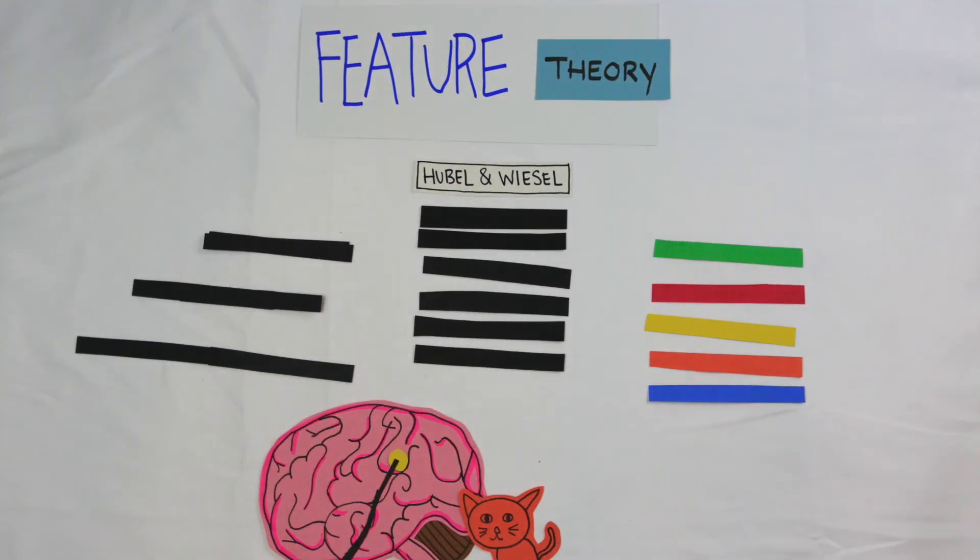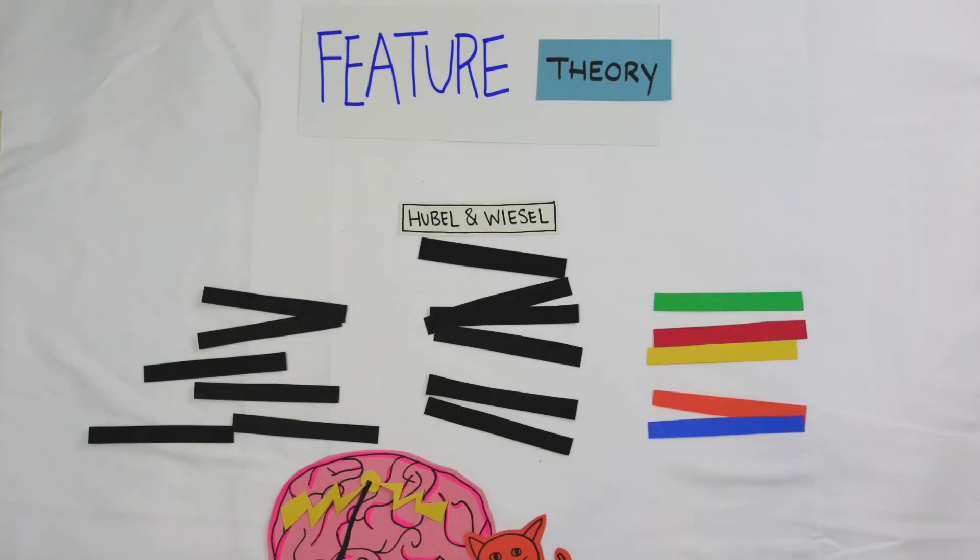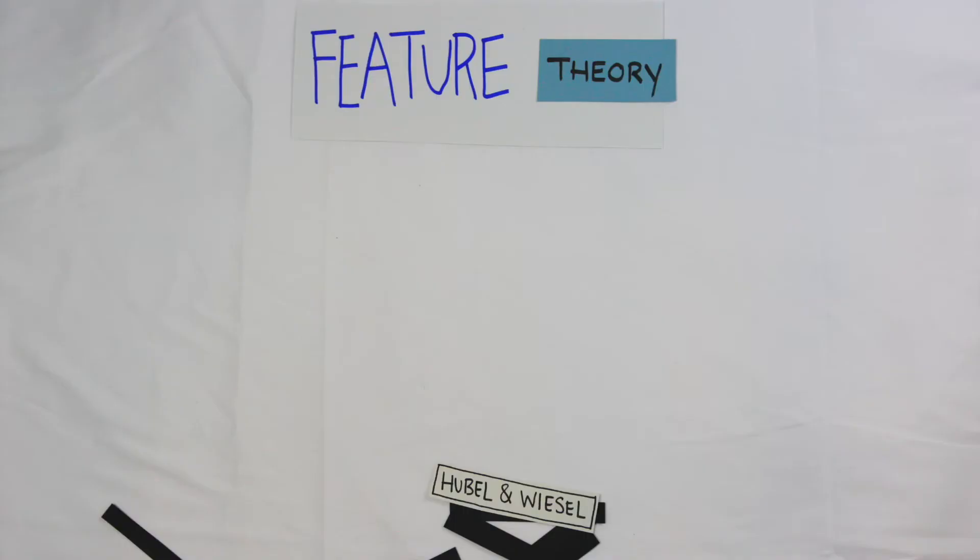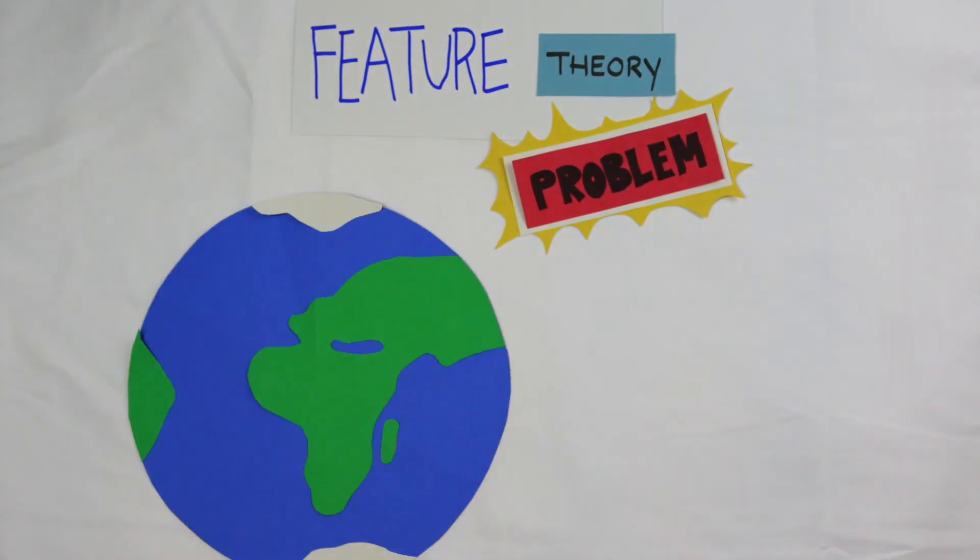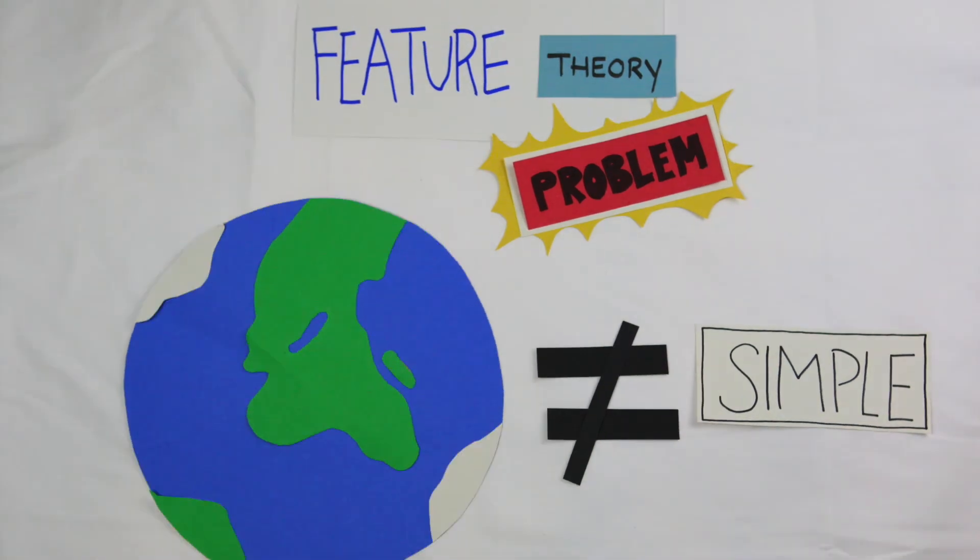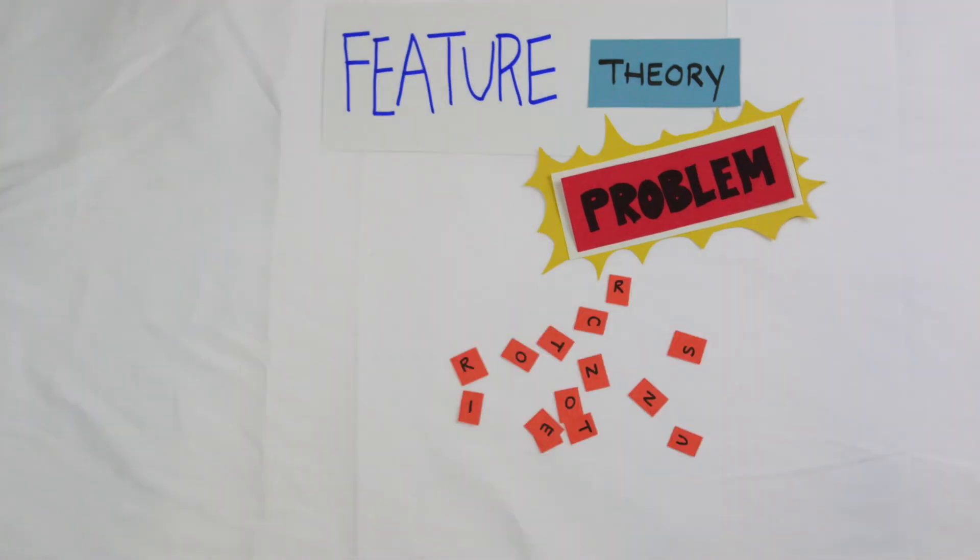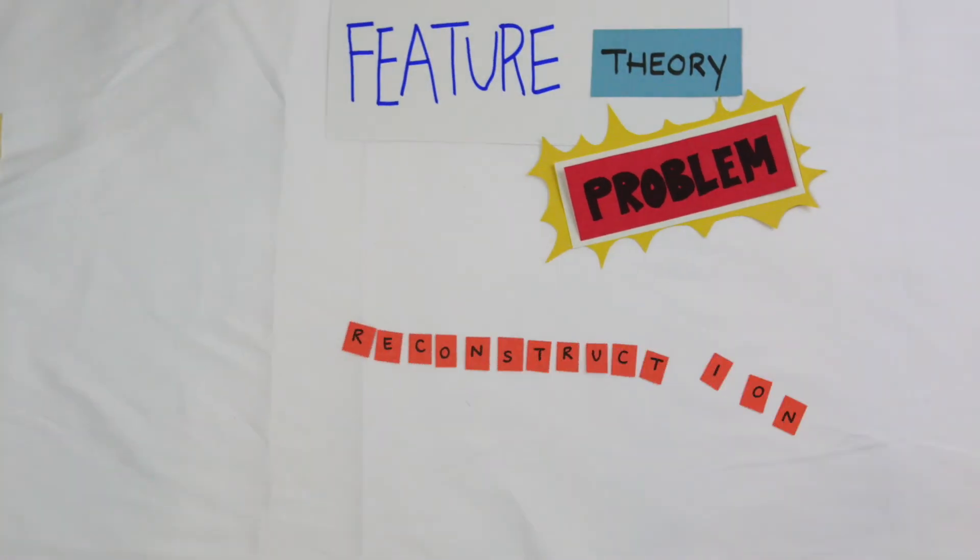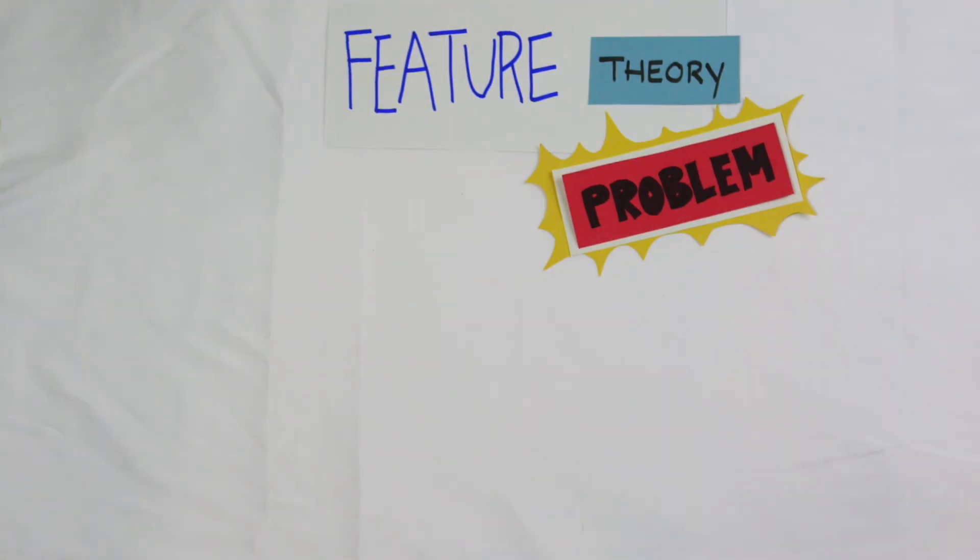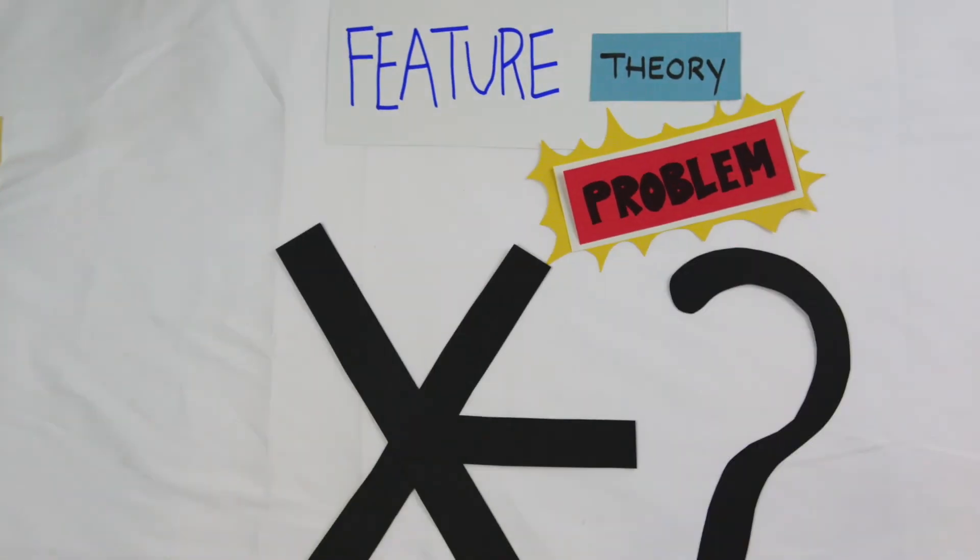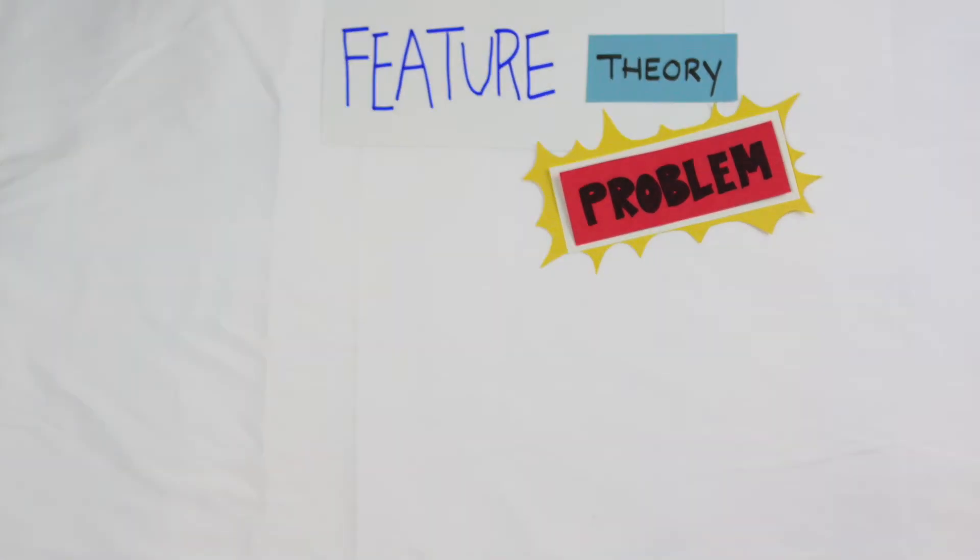The main problem with feature theory is that our world is just not as simplistic as this theory assumes. There are many more complexities with perception beyond just length, movement, and color structure. Another problem is the issue of reconstruction. It would be highly difficult to know the order of each individual feature and where it goes without using some other system. If features were combined improperly, the end result could be a very different perception.